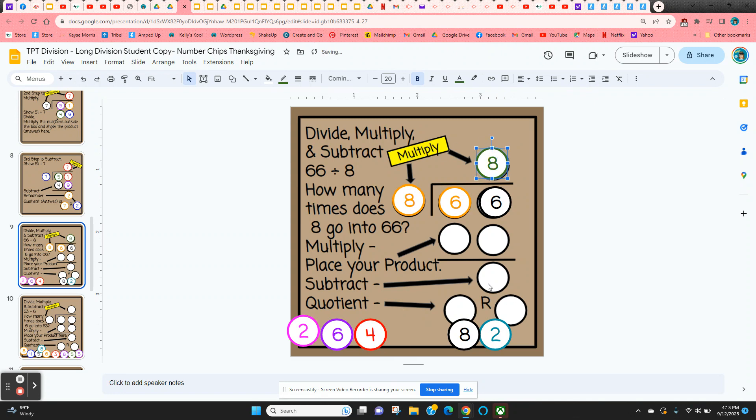Multiply. 8 times 8. We get 64. So this really helps students who struggle with this. Gives them a little leg up. Because they've got all the numbers they need. Now we subtract. We get 2. And the answer 8. Remainder 2.